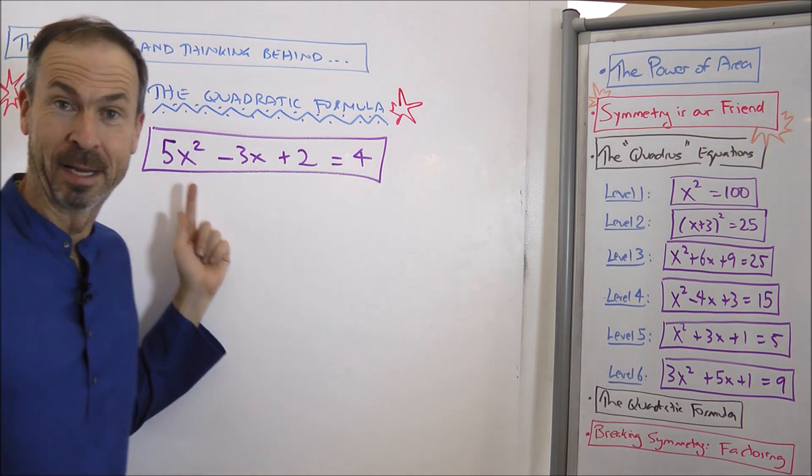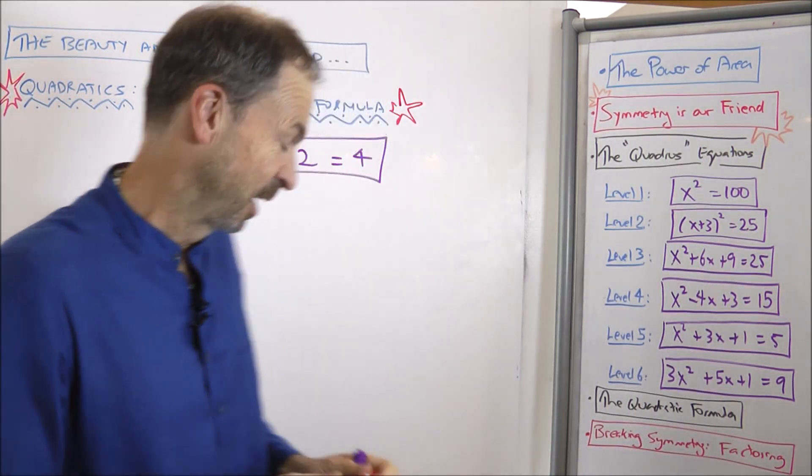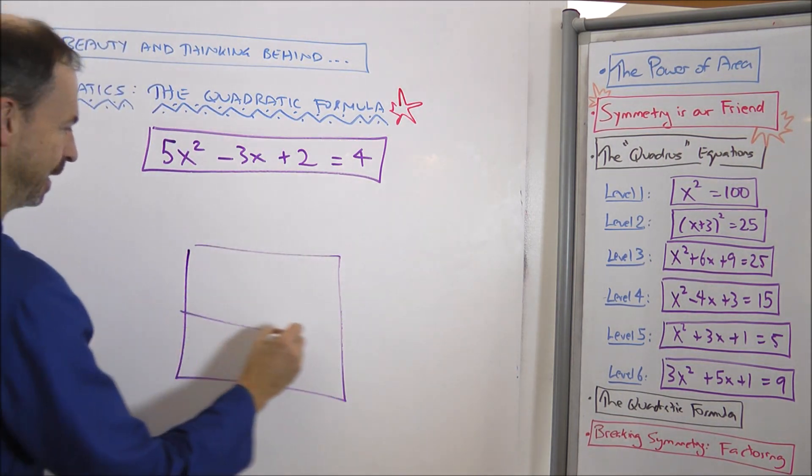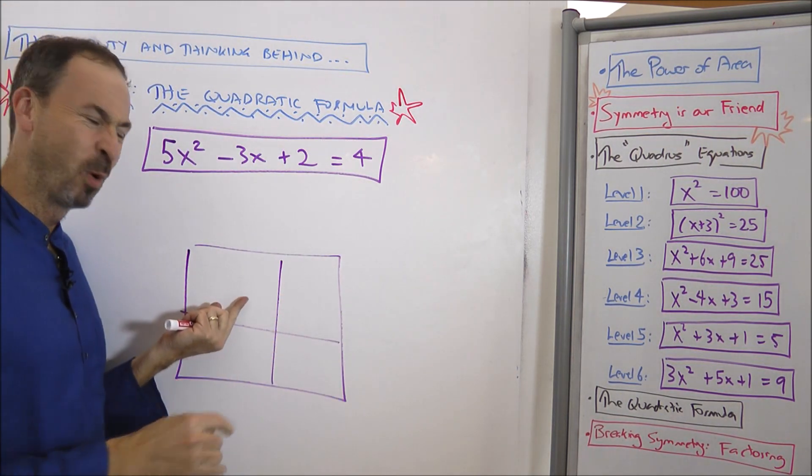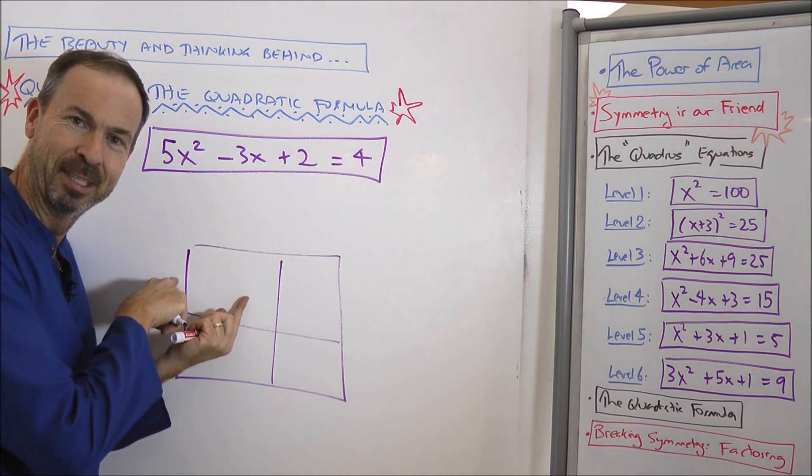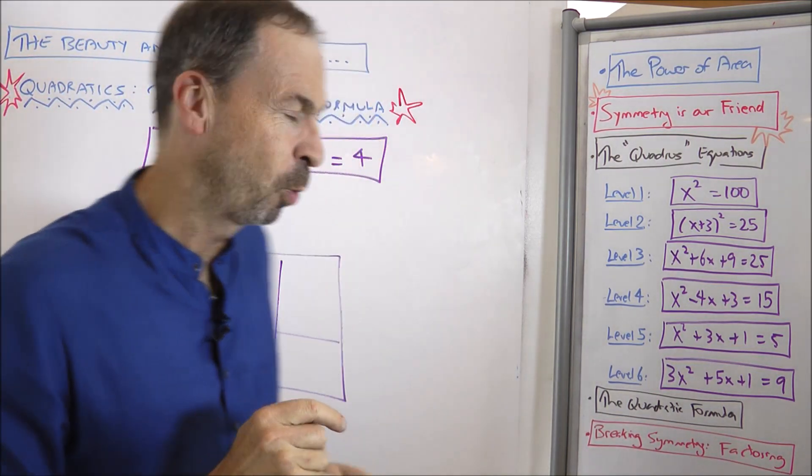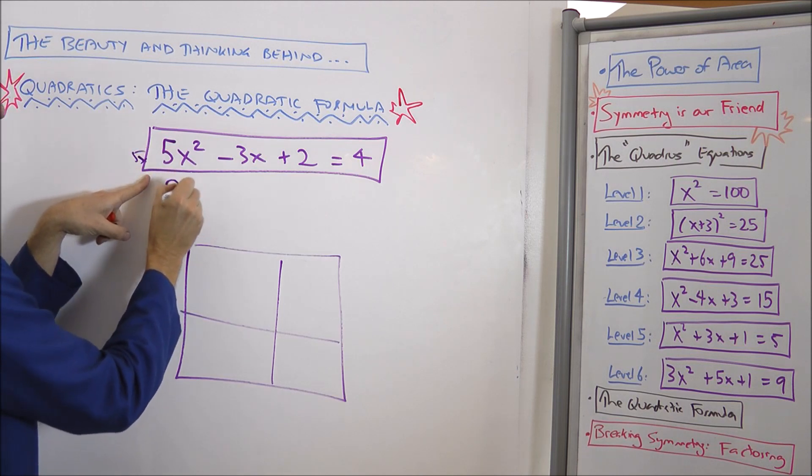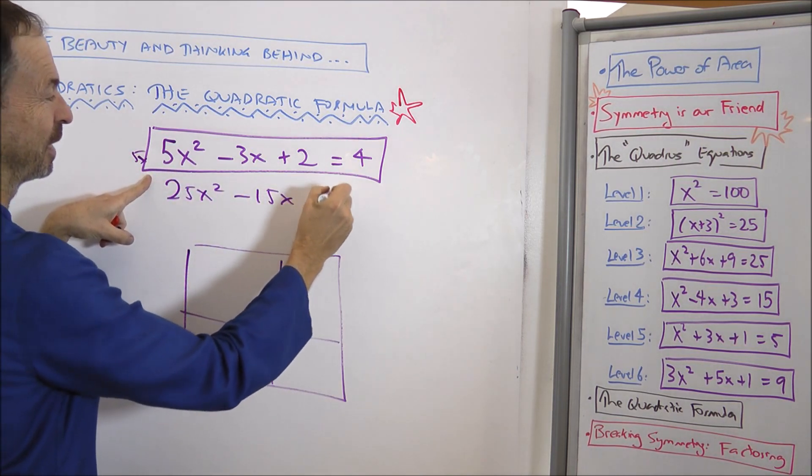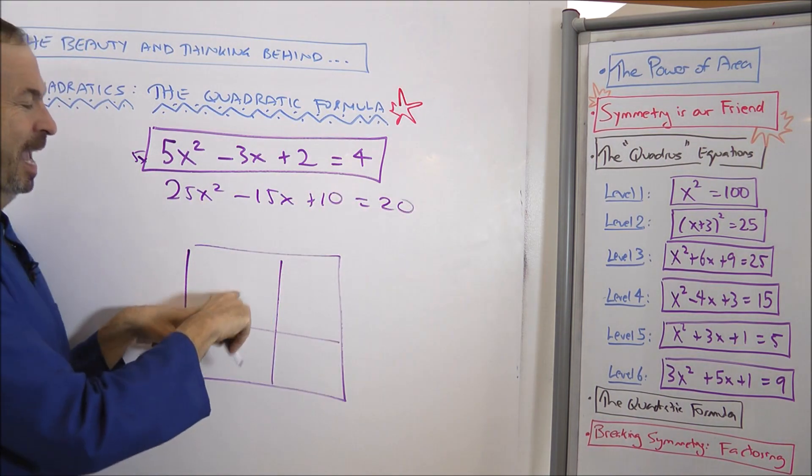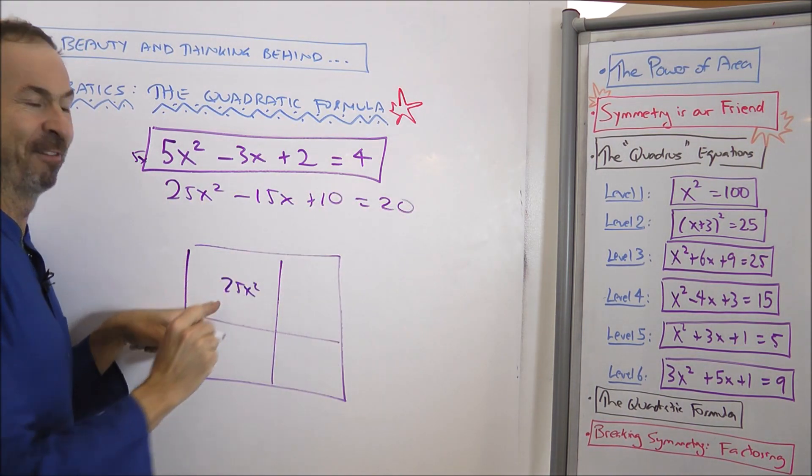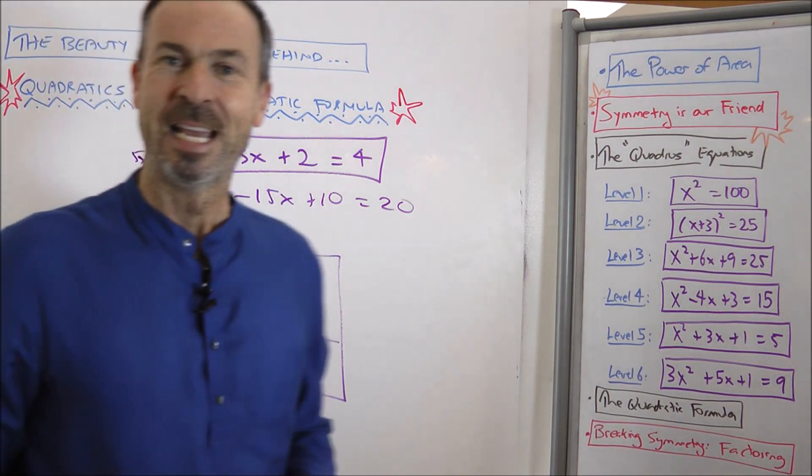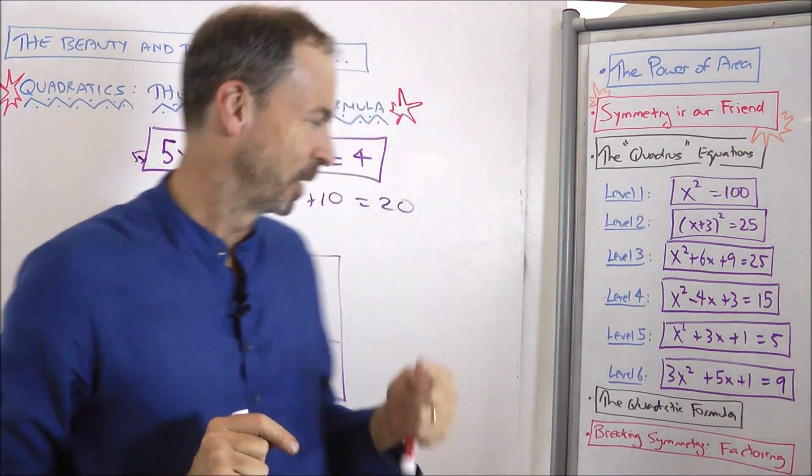First of all, this 5, this 5 in front of the x squared is annoying. It's not a perfect square. So if I have to draw the little area model, the square model of this, this piece of area 5x squared doesn't have nice dimensions. Unless I multiply the whole equation through by another 5.